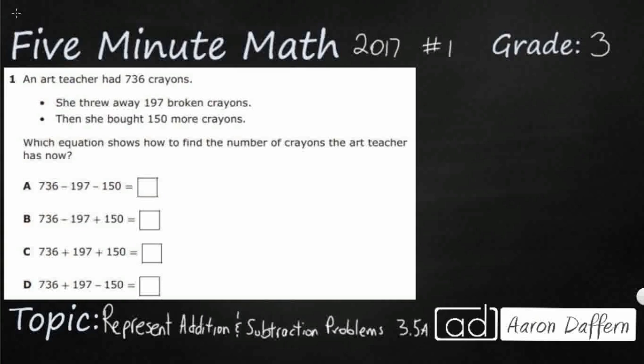So we have an art teacher who has got some problems with some crayons. We've got three numbers here: 736, 197, and 150. And if you notice, all of our answer selections have those three numbers in the exact same order. The only thing we need to figure out is which equation is correct, because sometimes they start with subtraction, sometimes they end with addition, and then all of them have a second operation. So this is a two-step or multi-step problem. We need to figure out which operation we do first and which operation we do second.